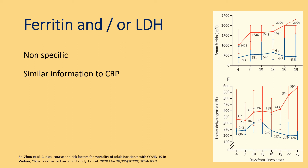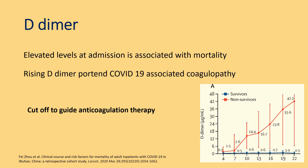In rare cases of hemophagocytosis or suspected multisystem inflammatory syndrome, ferritin may be useful. D-dimer is another controversial marker; elevated levels at admission are associated with mortality, and a rising D-dimer indicates COVID-associated coagulopathy. The cutoff to guide anticoagulation therapy in individual patients is still not clearly defined.